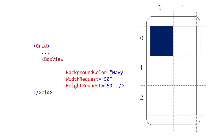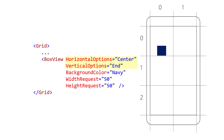Grid uses a view's layout options to determine its size and position within its assigned cell. Grid respects both horizontal options and vertical options. By default, these options are set to fill. Start, center, and end options determine the view's position within the cell. Fill means you'd like the view to fill the entire cell in a specific dimension. Remember, both horizontal options and vertical options need to be filled to have the view grow to the entire cell, but that's also the default.